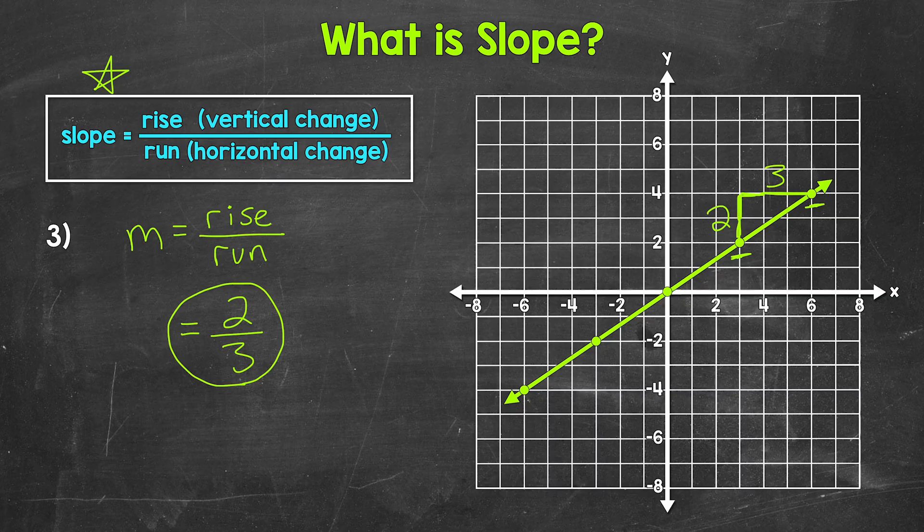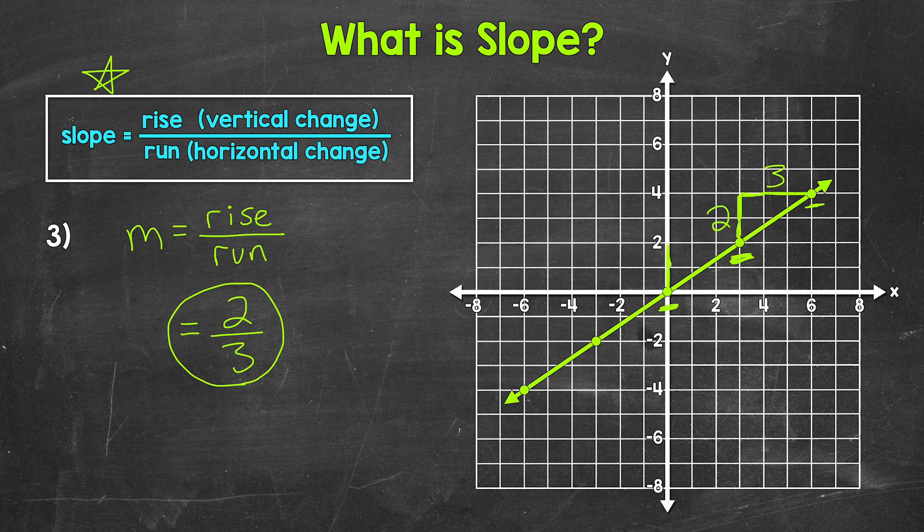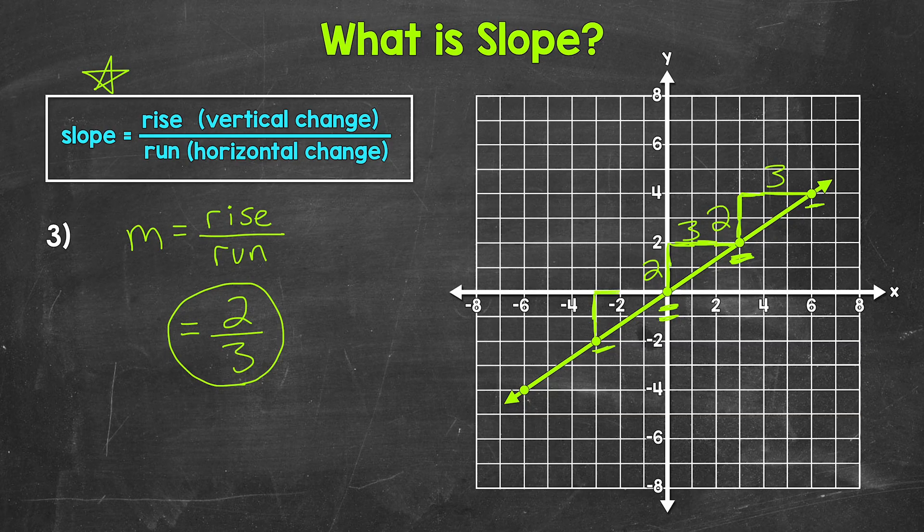But before moving on, I want to show that any other two points will work as well. So let's try this point and this point. So rise of one unit, two units, and then run of one unit, two units, three units. So we get the same exact thing. And that will be the case for this point and this point as well. Rise of one, two, and run of one, two, three. So rise of two, run of three.